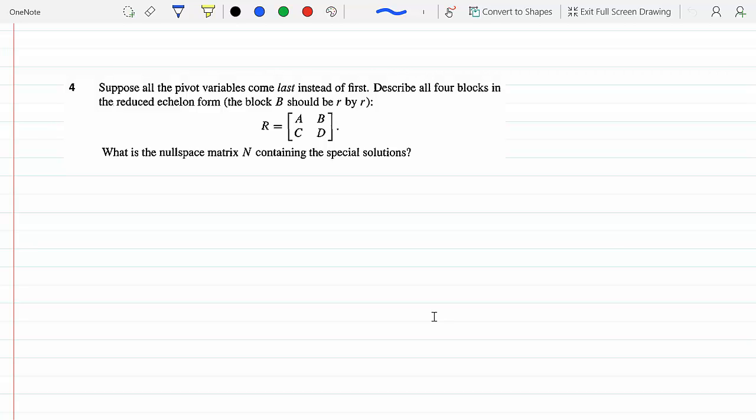Remember, because they said it's in the reduced row echelon form, so everything above and below the pivot has to be zero and the pivots have to be one. So that means matrix B has to be an identity matrix R by R, whatever R is.